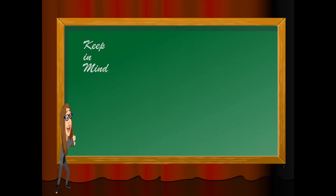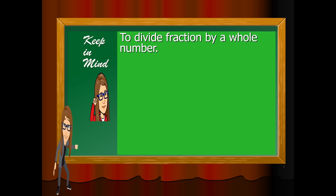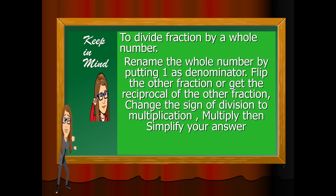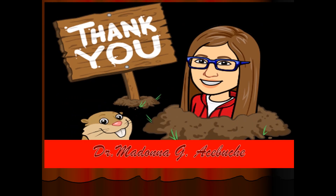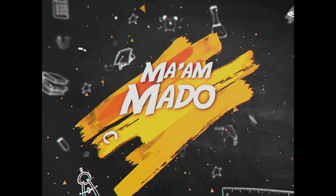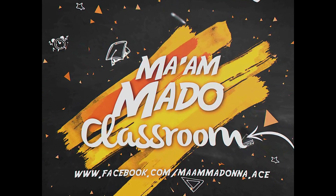Okay class, I want you to keep in mind: to divide a fraction by a whole number, rename the whole number by putting 1 as denominator, leave the other fraction or get its reciprocal, change the sign of division to multiplication, multiply, then simplify your answer. I hope you learned something today. This is Mamado. See you on our next lesson. Thank you. Bye.